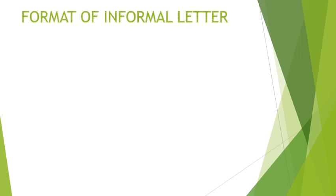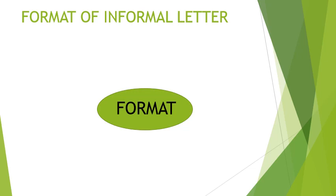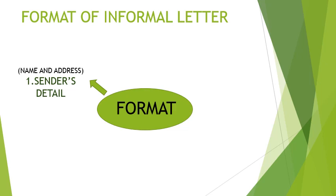Now let's understand the format of informal letter writing. An informal letter must have six things in it. Number one is sender's detail — here the sender's address comes, and the sender is the one who is writing the letter. Number two is the date — the date on which the letter is written. Suppose you are writing a letter on 3rd April 2020; you can write it in the way mentioned here, which is the most common way of writing a date.